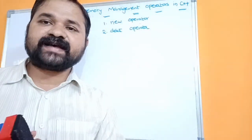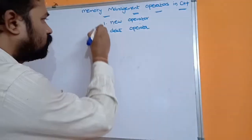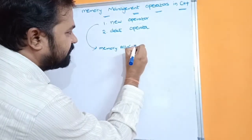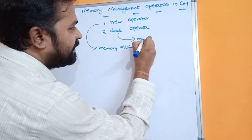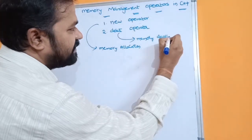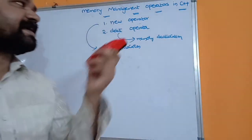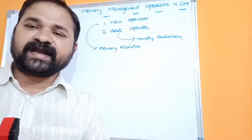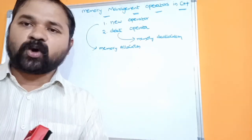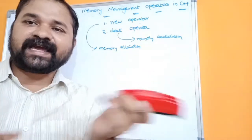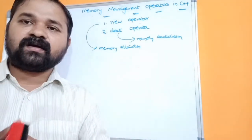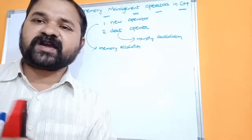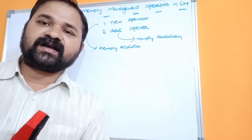The new operator is called as memory allocation operator. We can allocate memory to a pointer variable, or we can allocate memory to an array. New operator allows us to allocate memory for a pointer variable, array, structure, and a class.